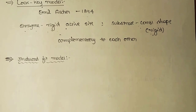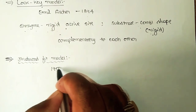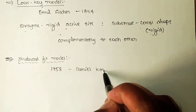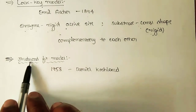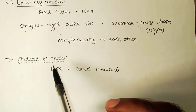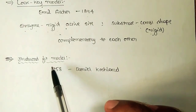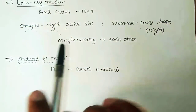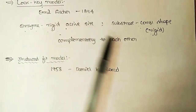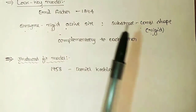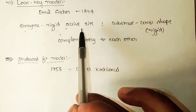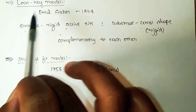Keeping this point in mind, in the year 1958 a scientist by the name Daniel Koshland proposed the induced fit model. According to this induced fit model, the conformation of the active site of the enzyme is not rigid. When the substrate molecule approaches the enzyme, according to the conformation of the approaching substrate molecule, the substrate induces changes in the conformation of the active site of the enzyme.